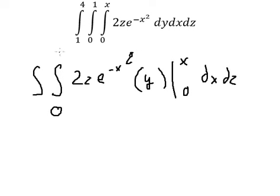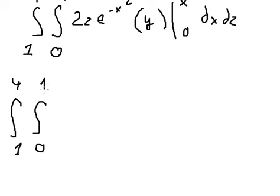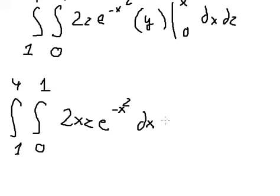This one we found from number zero to number one, and from number one to number four. We put zero in here so we will have a bound — the integral of z times e to the power of negative x squared dx dz.